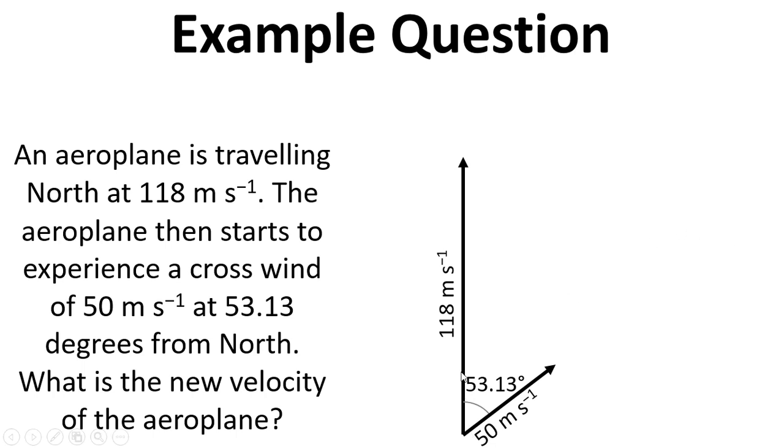So we've got the two vectors. We've got the velocity north and the crosswind, 50 metres per second. And to add them together, we need to move the tail of one to the head of the other. And now the new vector is simply going from the tail of the first one to the head of the second one.